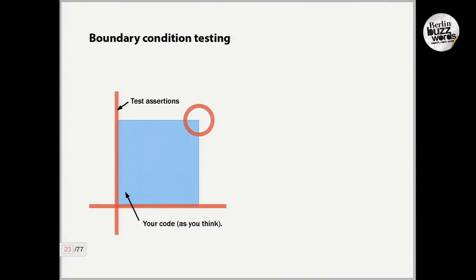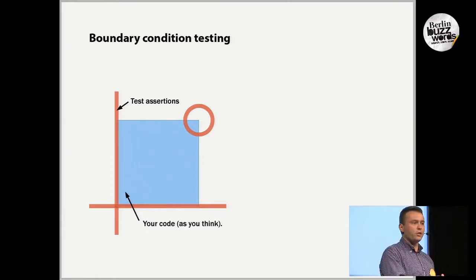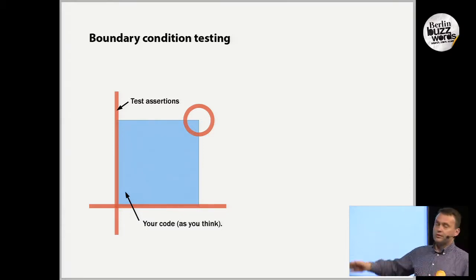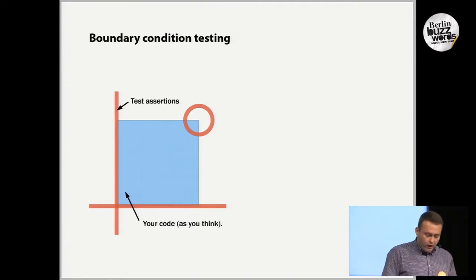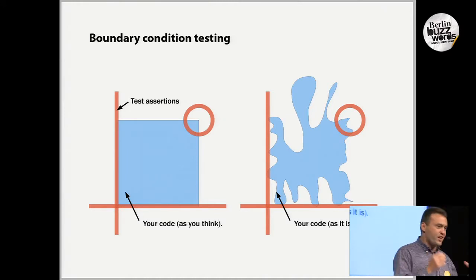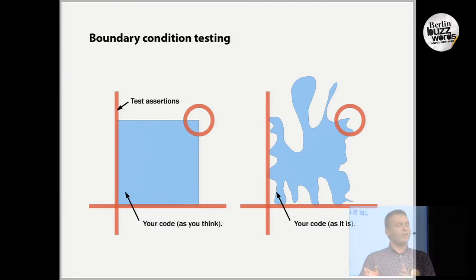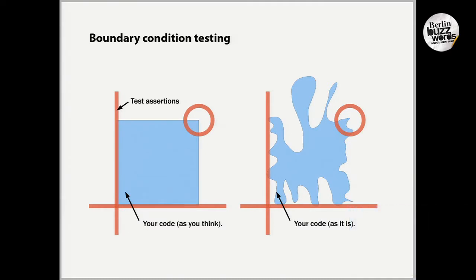Generalizing this a bit, what you think about your code — depicted here with this blue rectangle — and what you think about your assertions, depicted here with the red lines and circles, these are far off from what the real world is actually like. The test still passes, it just does things that you wouldn't think are actually happening, or it doesn't do things that you think it should be doing.